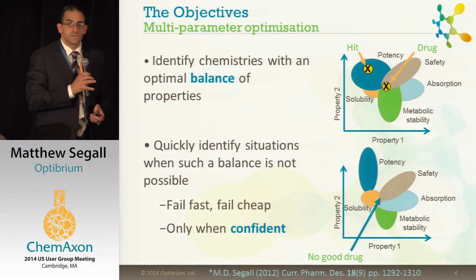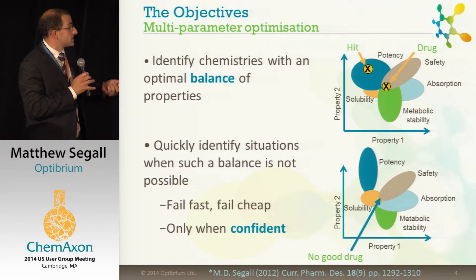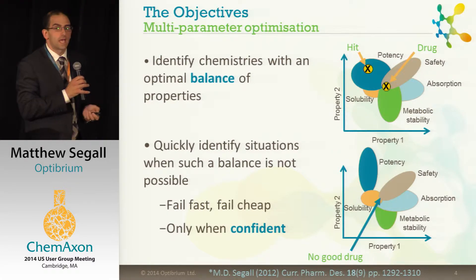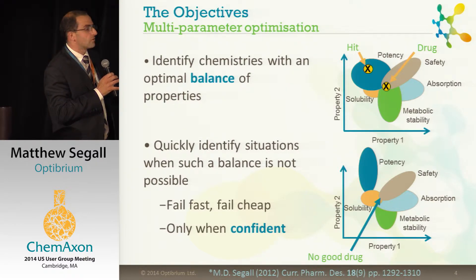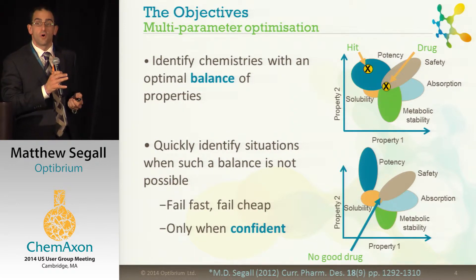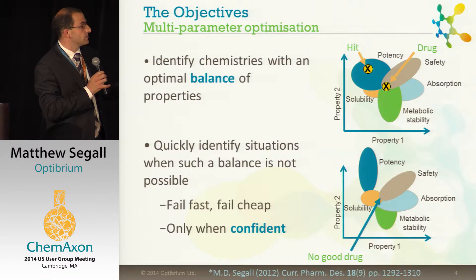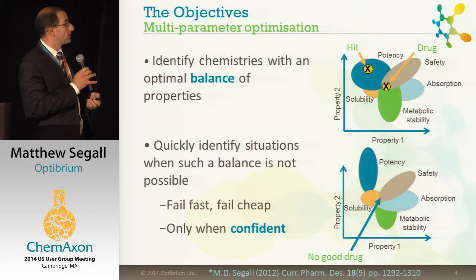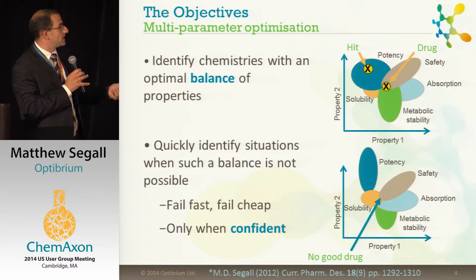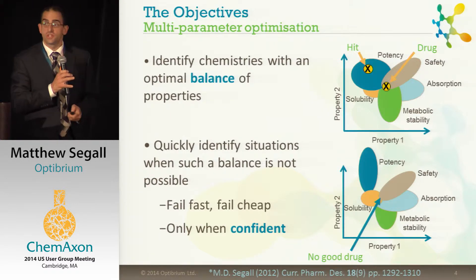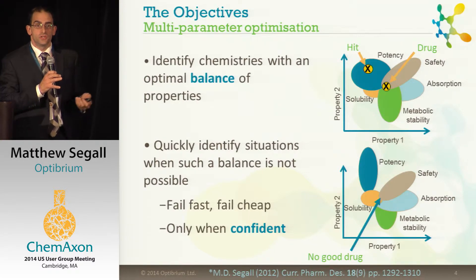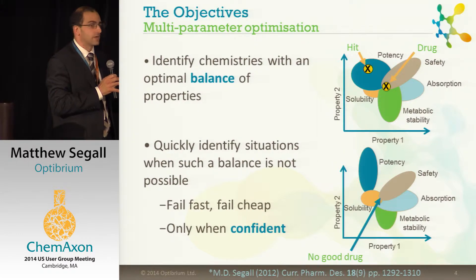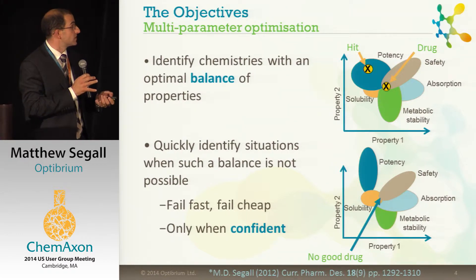StarDrop's core philosophy is the idea of multi-parameter optimization. We know that a successful, efficacious and safe drug that makes it to the market is at the sweet spot in chemistry where many different properties come into alignment. Most projects start with a hit that has potency against a target, but is very unlikely to have all the properties that we need. We want to move that chemistry as quickly as possible to this area where we're most likely to find that high quality drug. We also want to identify the situation when that balance isn't possible — fail fast, fail cheap, but only when confident. Because we don't want to miss an opportunity due to the uncertainty in the data, whether that's variability in experiments or statistical uncertainty in computational methods.